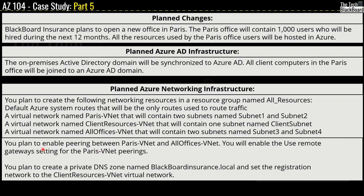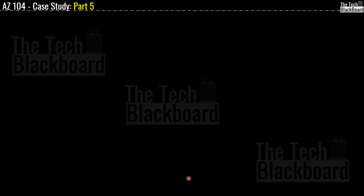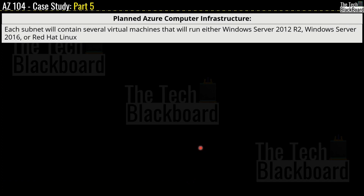Additionally, a virtual network named AllOffices-vNet will contain two subnets named Subnet 3 and Subnet 4. You plan to enable peering between Paris-vNet and AllOffices-vNet, and will enable the 'use remote gateway' settings for Paris-vNet peering. You also plan to create a private DNS zone named blackboardinsurance.local and set the registration network to the ClientResources-vNet virtual network. For planned Azure compute infrastructure, each subnet will contain several virtual machines running Windows Server 2012 R2, Windows Server 2016, or Red Hat Linux.